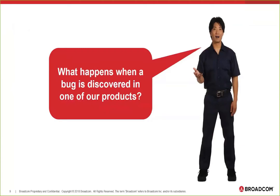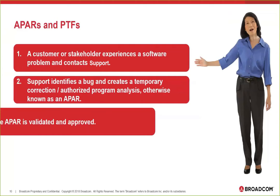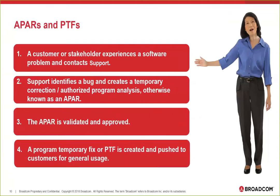When a bug is discovered, you've probably heard these terms — APARs, PTFs. You start with an APAR, which is your Authorized Program Analysis Report. Support helps us identify the bug, whether it's level one or level two, and we create a temporary fix. Once that's validated and approved, we release a PTF, which is a Program Temporary Fix. It's counterintuitive because you hear 'temporary,' but if we release the PTF, that's actually the general usage — that is the fix. You'll hear: 'I've got an APAR, but I'm waiting on the PTF.'